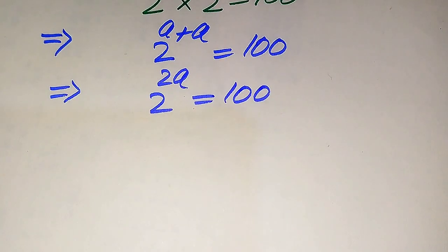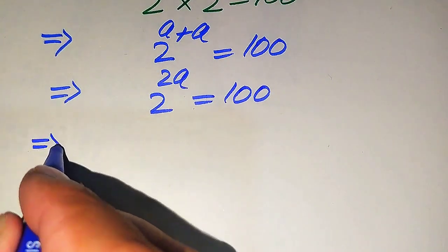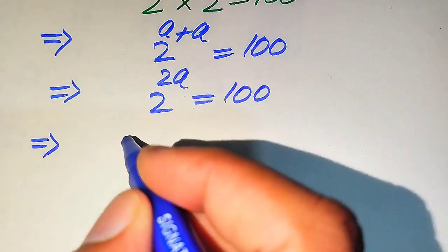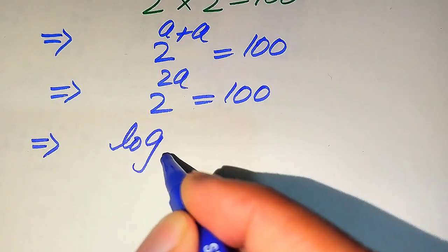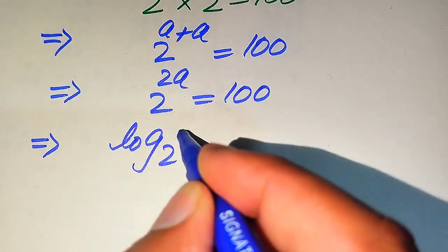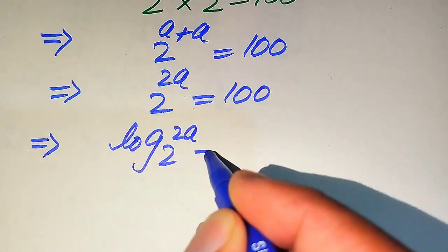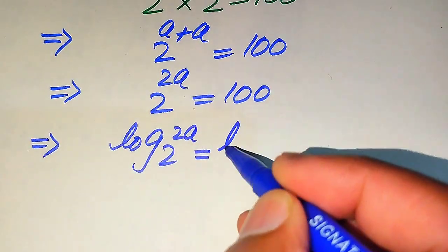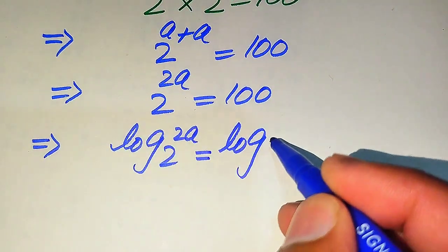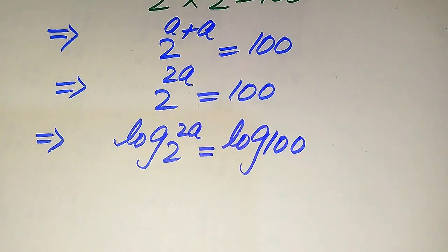Now for the values of a, we solve this problem with the help of common logarithm. We apply log on both sides, and after taking log we write our equation in this form: log of 2 to the power of 2a is equals to log of 100.